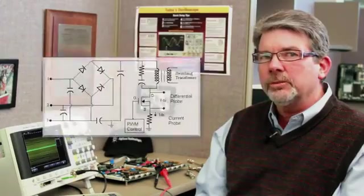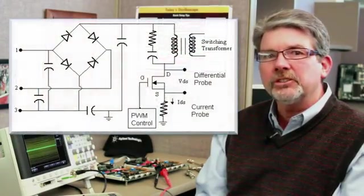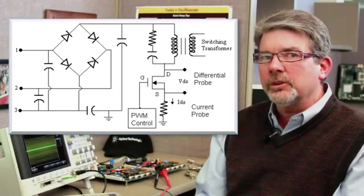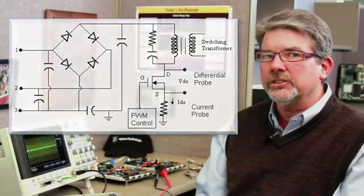Let's first look at a switching loss measurement in detail. In this example, I will use a differential voltage probe to measure the voltage across the drain and source of a switching transistor and an AC-DC current probe to measure the source current flowing through the transistor.